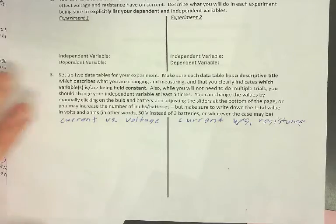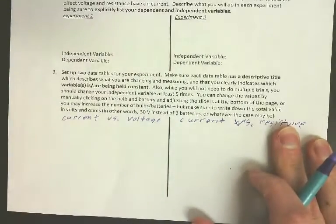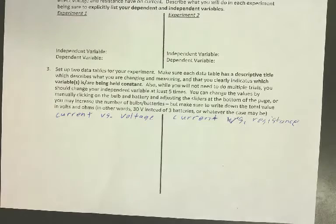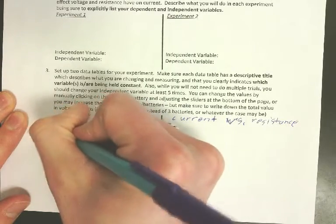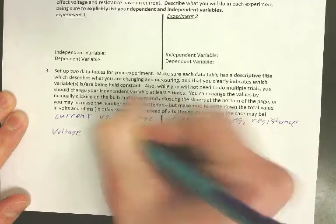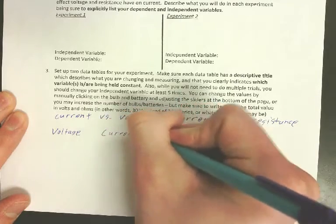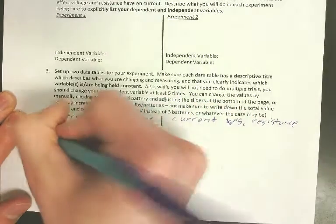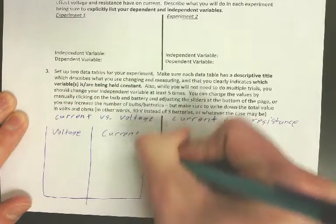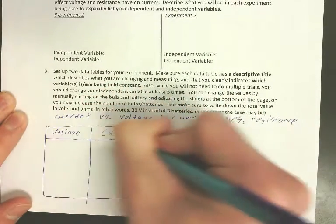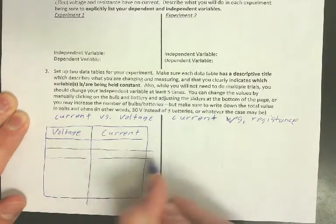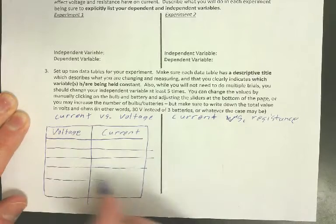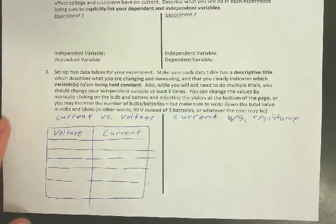Then you're going to make a chart. You're going to be measuring the current, changing the voltage, and changing the resistance. When you're doing the voltage chart, you're going to put your voltage values in one column and your current values in another. You need to decide at least five different voltage values, then measure the current.